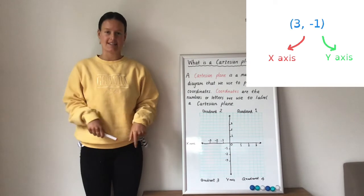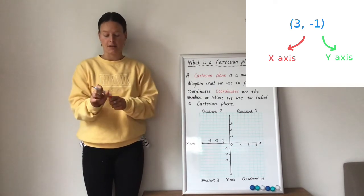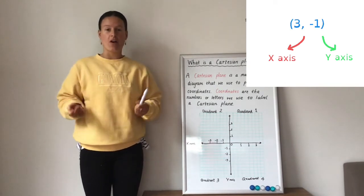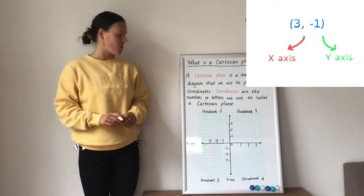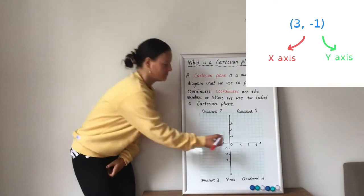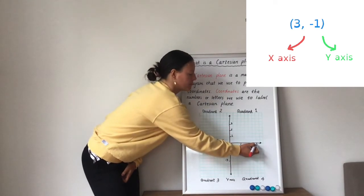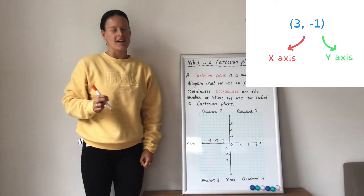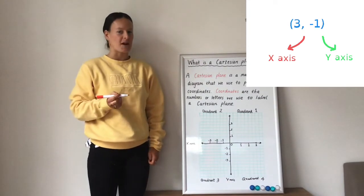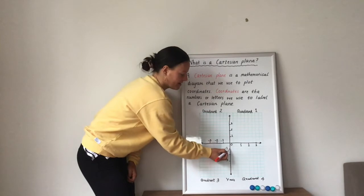If we look at these coordinates as an example, we can plot the coordinates on our Cartesian plane. The first number in the brackets is 3. So, that refers to where we are on our x-axis, which is over here. The second number is negative 1, and that refers to where we travel on our y-axis, which is down here.